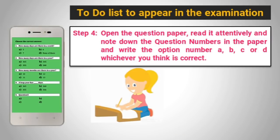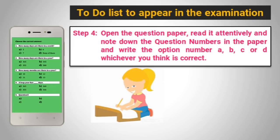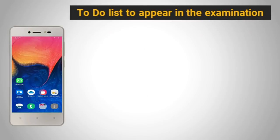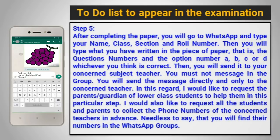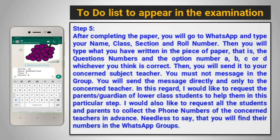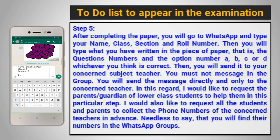Step 4: Open the question paper, read it attentively and note down the question numbers in the paper, and write the option number A, B, C or D, whichever you think is correct. Step 5: After completing the paper, you will go to WhatsApp and type your name, class, section, roll number. Then you will type what you have written in the piece of paper — that is, the question numbers and the option number A, B, C or D, whichever you think is correct. Then you will send it to your concerned subject teacher.